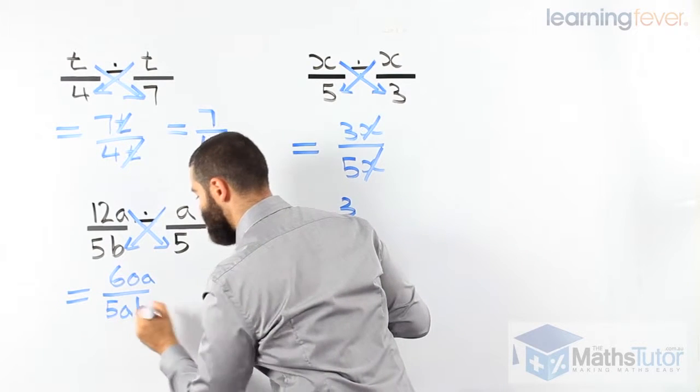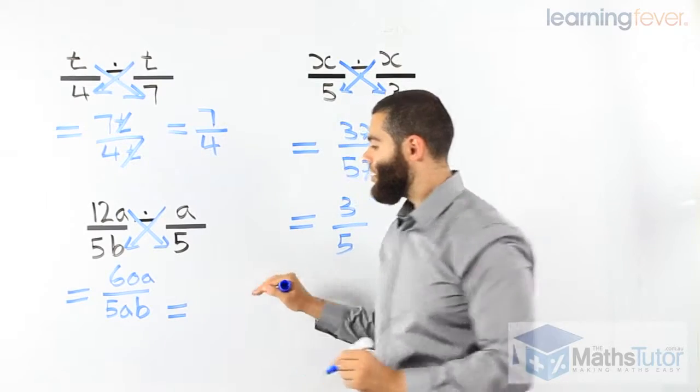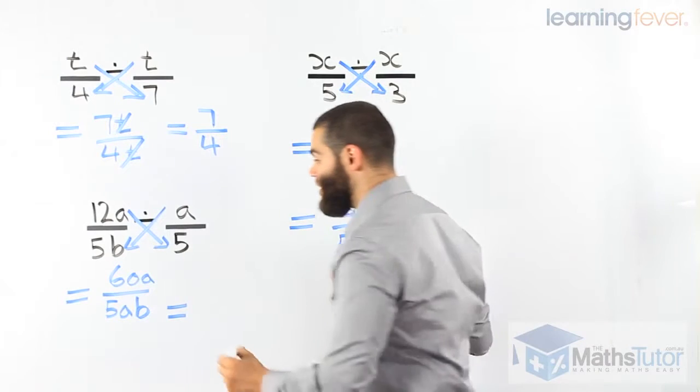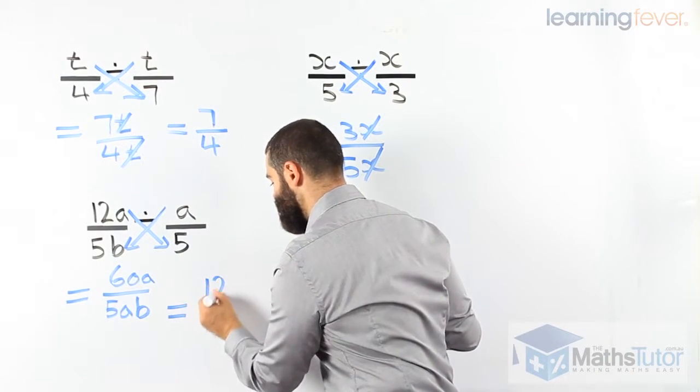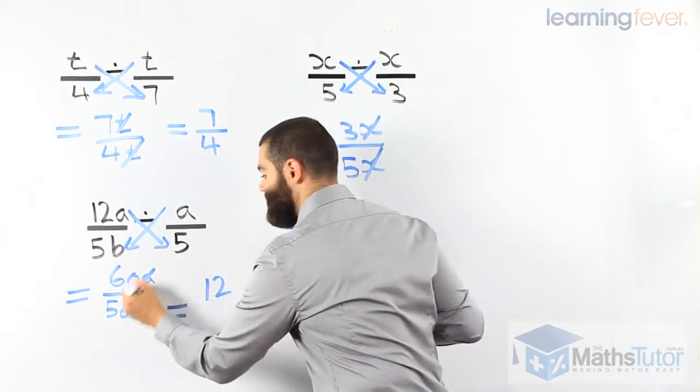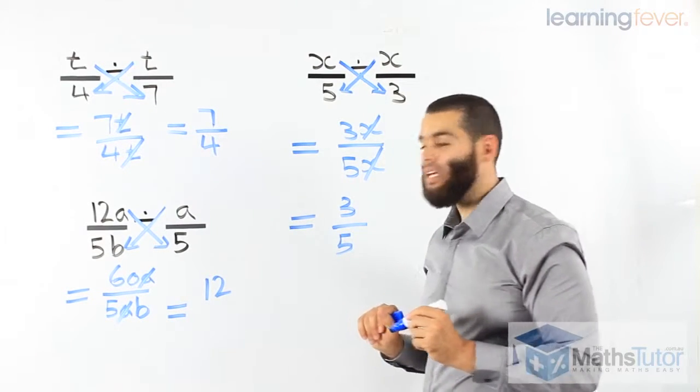Remember, very important to know your times tables. Now, we know 60a over 5ab. What do you notice? We can notice here that we can simplify. 60 over 5 is 12. 60 divided by 5 is 12. The a's cancel. a divided by a is 1. It's gone. And we have a b.